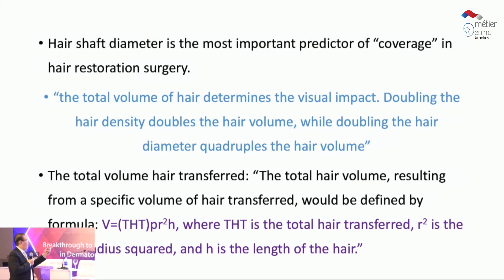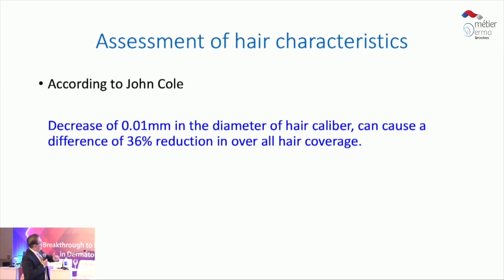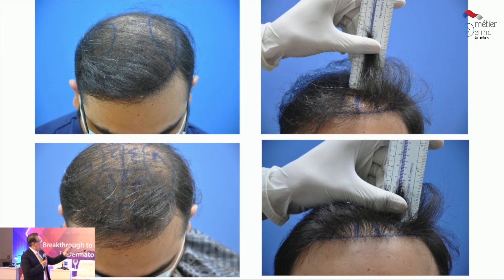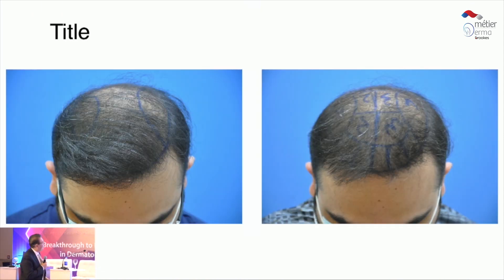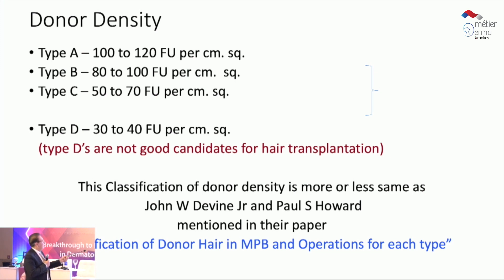One thing people don't give enough importance to is hair length. Increasing diameter by just 0.01 mm — about 10 microns — can improve overall coverage by 36%. Hair length can increase coverage exponentially: the longer the hair grows, the more coverage you get. You can see in the comparison images that simply reducing length increases visibility of the scalp. Hair curl and color also matter — white hair blends with the skin, so patients with white hair need fewer grafts for a good appearance.